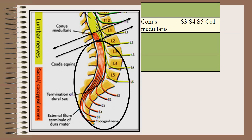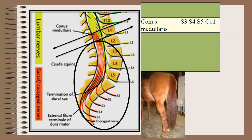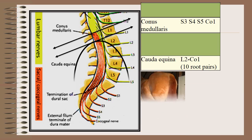There is a formation of a bunch of roots which consist of 10 root pairs from L2 to CO1, which forms the cauda equina, and it looks like a horse tail.